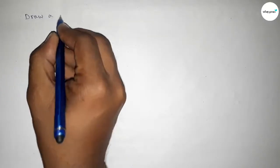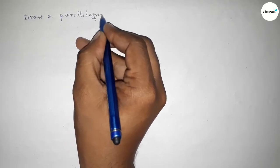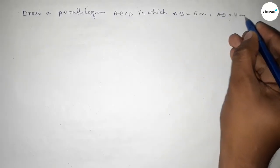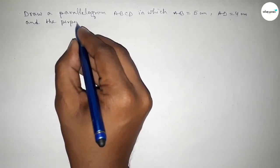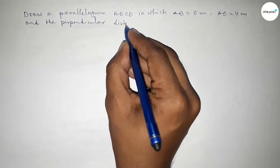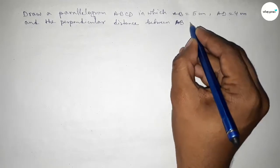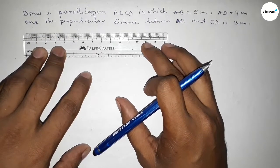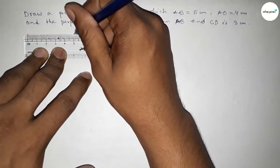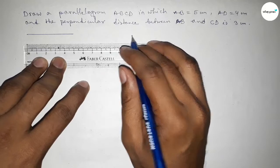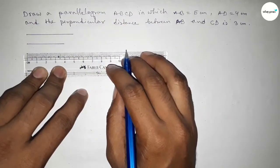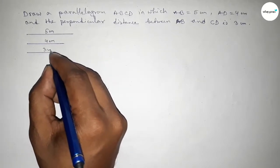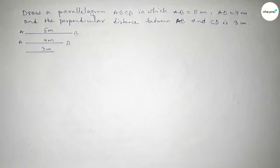Hi everyone, welcome to SI Share Classes. Today in this video we have to construct a parallelogram ABCD in which AB equals 5 centimeter, AD equals 4 centimeter, and the perpendicular distance between AB and CD is 3 centimeter. So by this we have to construct a parallelogram. First of all, drawing a line of length 5 centimeter, a line of 4 centimeter, and a line of 3 centimeter — this is AB and this one is the AD line.